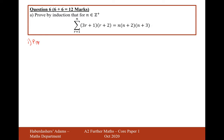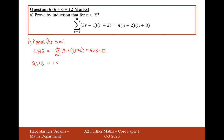Part 1 is proof for n equals 1. The left-hand side is going to equal the summation from 1 up to 1 of 3r plus 1 times r plus 2. Substituting in: 1 times 3 is 3, plus 1 is 4, times 3, which equals 12. The right-hand side, when we substitute 1 in, gives us 1 times 3 times 4, which is equal to 12 as well. Therefore, the left-hand side equals the right-hand side. So this is true.